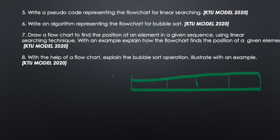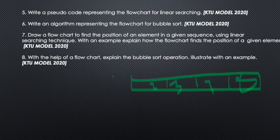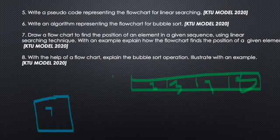There is one array. There are elements: 2, 3, 7, 8. Now you can see that 7 is the position of an element. This is our question: find the position of an element in a given sequence. How do I use the linear searching technique? The first element is compared.